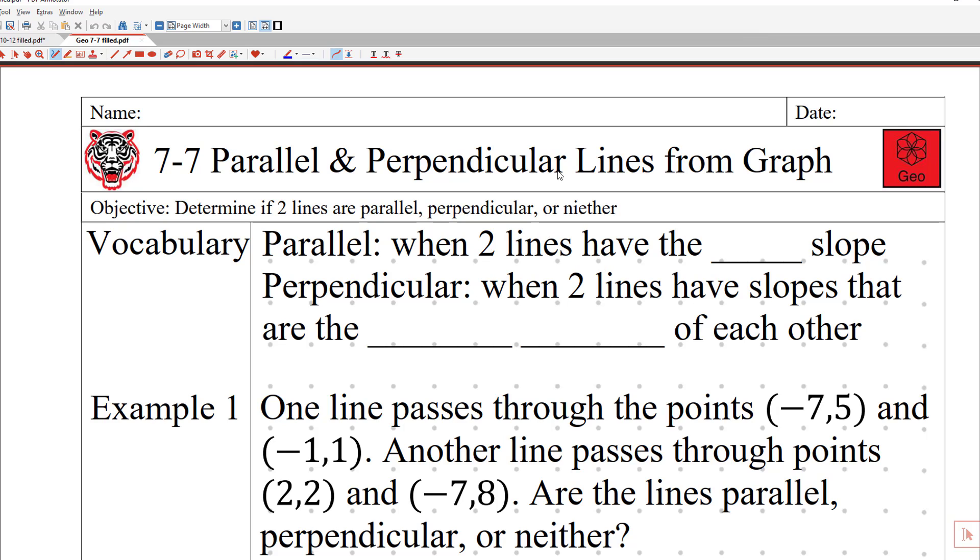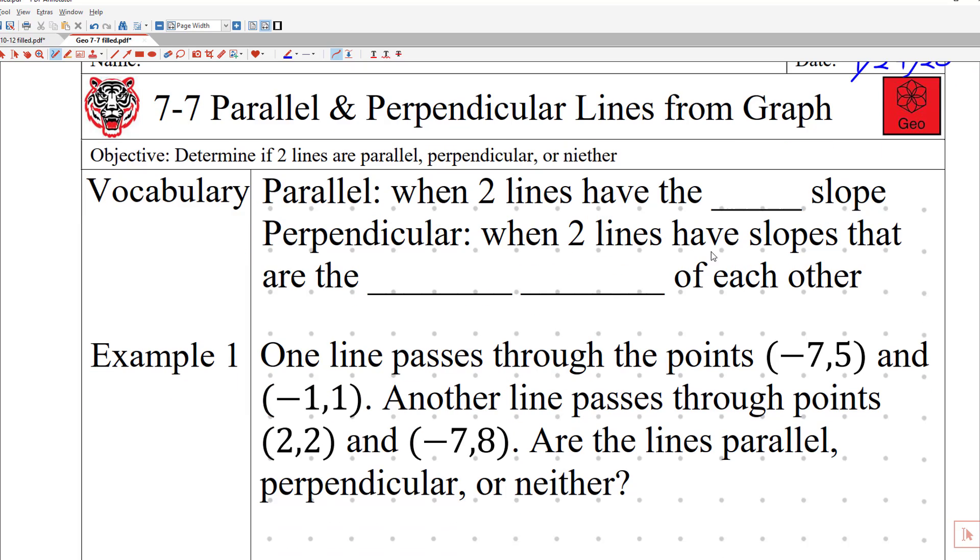This is Geometry Lesson 7-7, Parallel and Perpendicular Lines from a Graph. Today's date is Friday, April 24th, 2020. Our objective today is to determine if two lines are parallel, perpendicular, or neither from just points in a sentence and points on a graph.